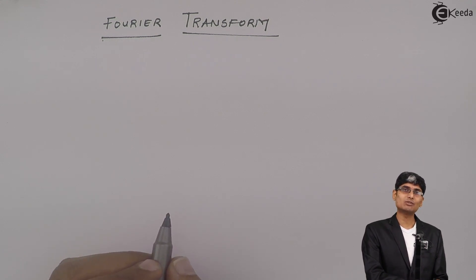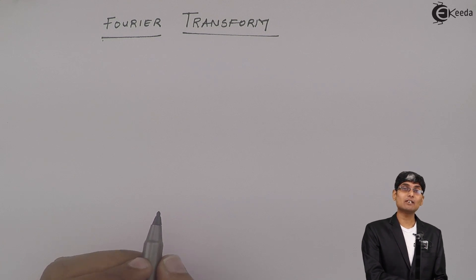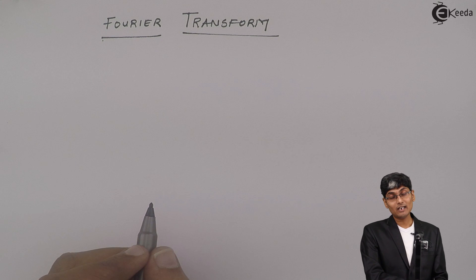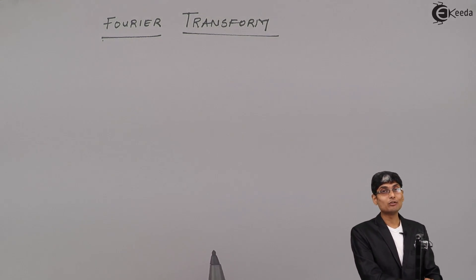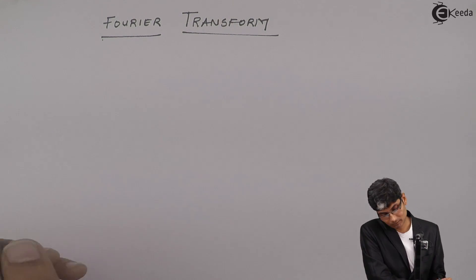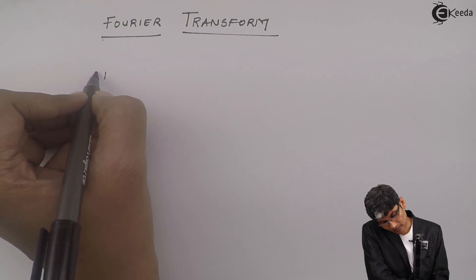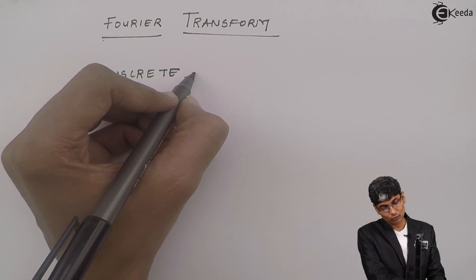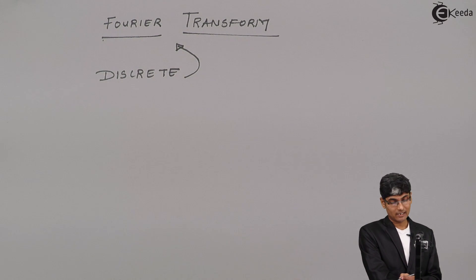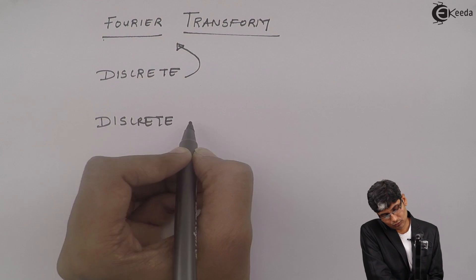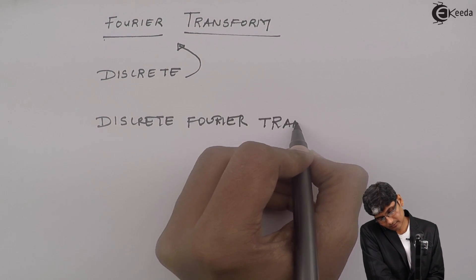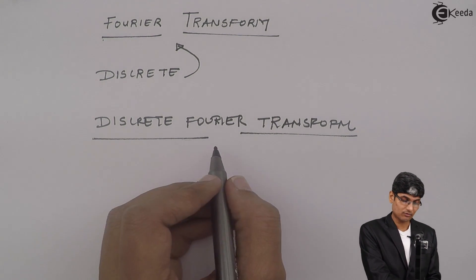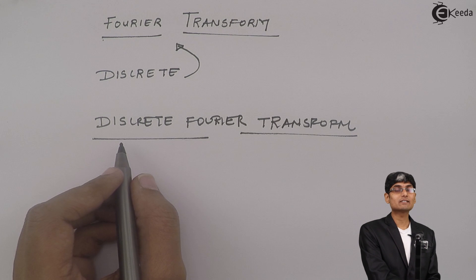We can also analyze various types of systems using Fourier transform, because looking at a system in frequency domain becomes much simpler and easier than in the time domain. So let us analyze different types of signals in the Fourier domain. We are going to analyze discrete signals and systems in Fourier domain, and hence the name discrete Fourier transform. Discrete Fourier transform is nothing but a Fourier transform of discrete time signals or discrete signals and systems.